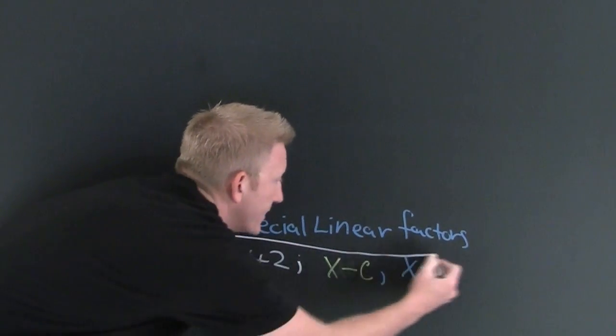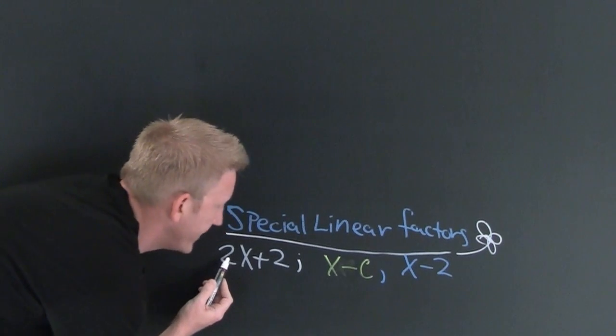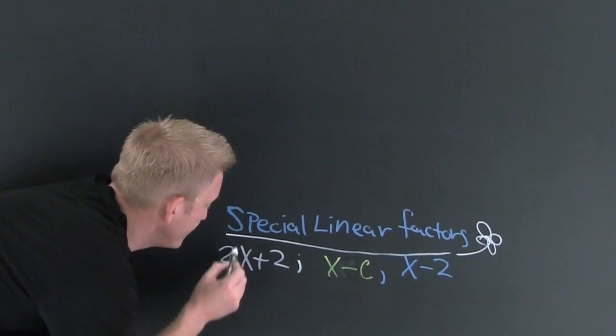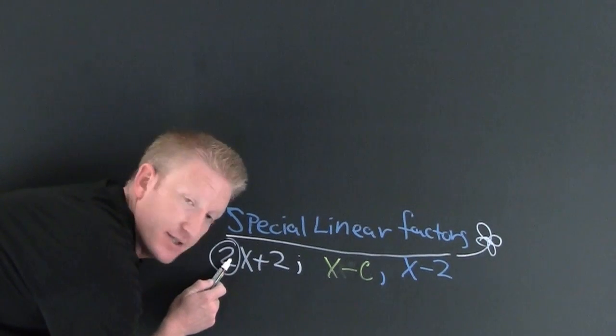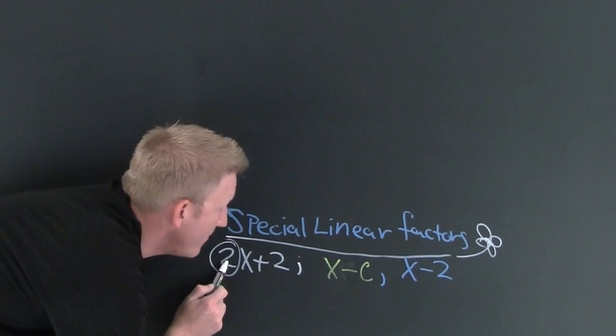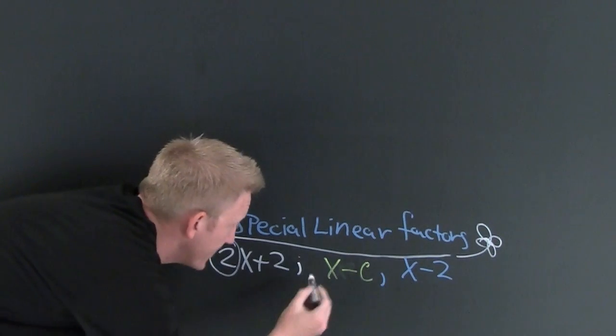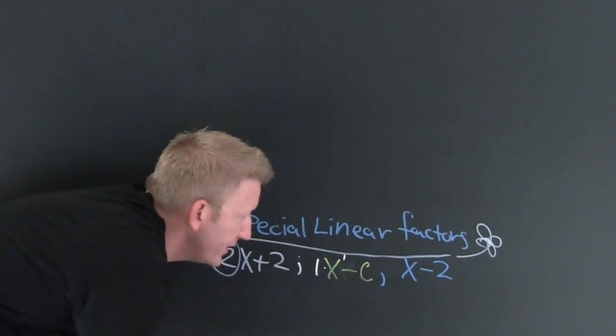Something like these guys. This is not a special linear factor. Why? Because my leading coefficient of my variable is not 1. What makes a special linear factor? A special linear factor has coefficient 1 and degree 1.